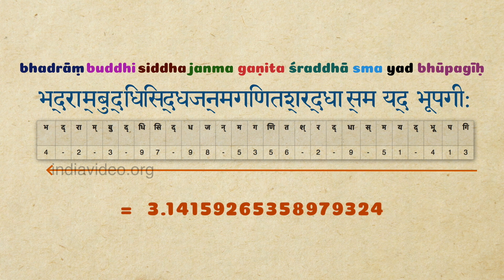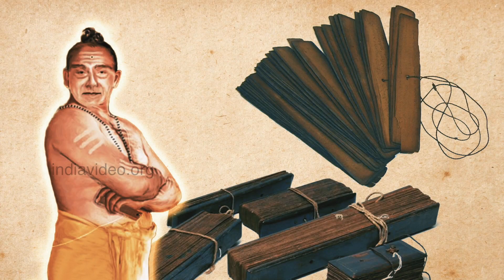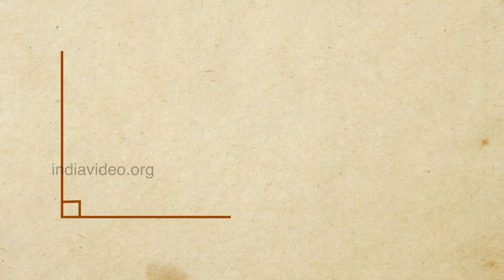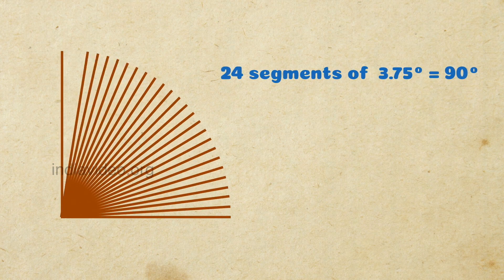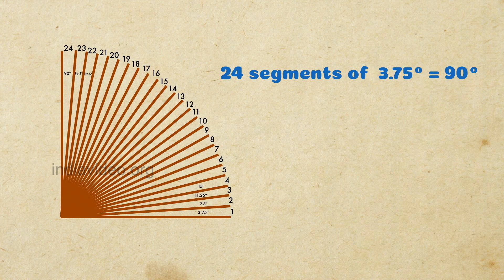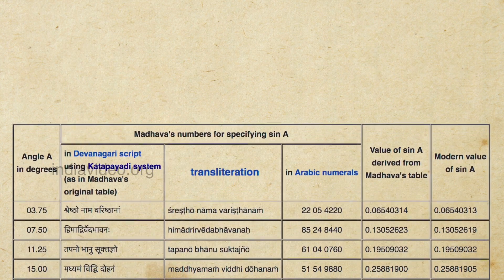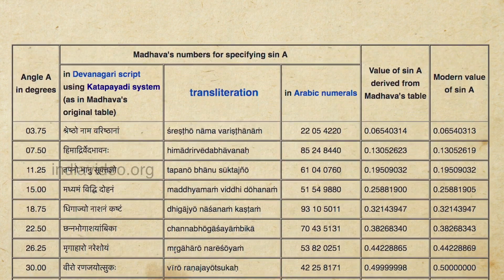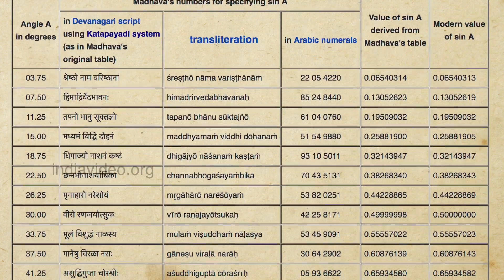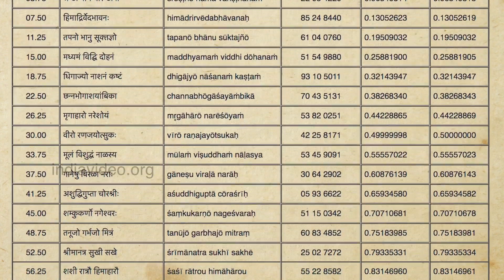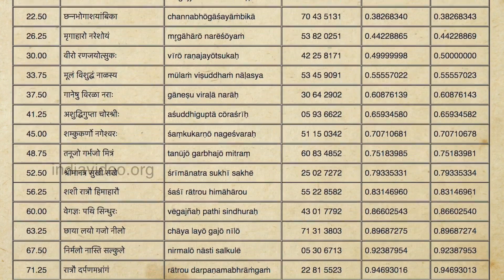It would be extremely difficult for anyone to remember the value of pi up to these many decimal places, but encoding its value into a verse makes it easy. A more involved example is the 14th century mathematician Madhava's use of Kattapayadi to encode the values of the trigonometric sine function from 0 to 90 degrees in multiples of 3.75 degrees. In his table, the sine value for each angle appears as a short Kattapayadi phrase, and the table of values can be easily reconstructed by remembering these phrases in the right order.